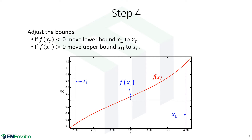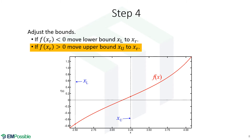The next step is to adjust the bounds. We do this by looking at that function value — specifically the sign of the function. If the sign is positive at our new guess, then the root has to be to the left, and we take our upper bound and move it to our guess. If that function value were negative, then the root would be to the right, and we would move the lower bound up to our guess. Here it's positive, so we take the upper bound and move it to our guess.